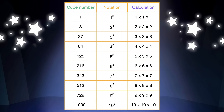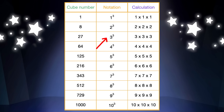Eight. It's two cube, or two times two times two. Next is 27. It is three cube, or three times three times three. Sixty-four. It's four cube, or four times four times four.